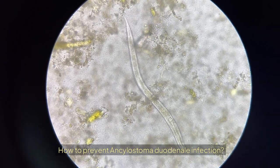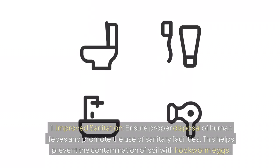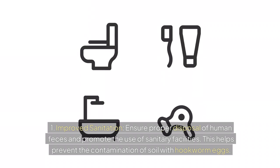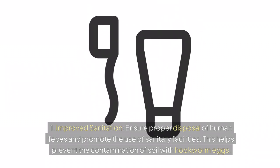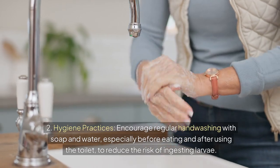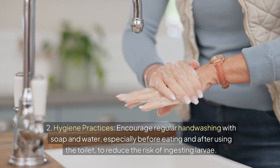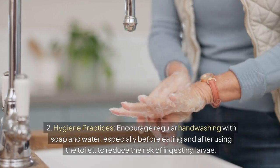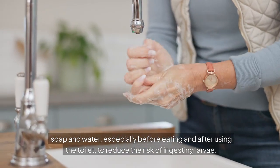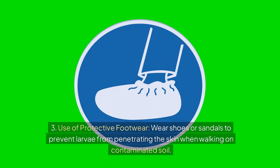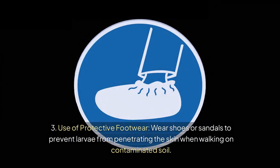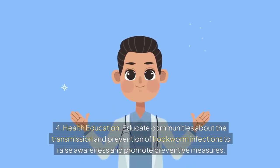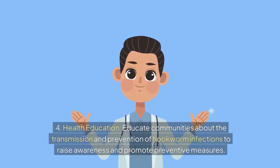How to prevent Ancylostoma duodenale infection. Measure 1 — Improved sanitation: Ensure proper disposal of human feces and promote use of sanitary facilities to prevent soil contamination with hookworm eggs. Measure 2 — Hygiene practices: Encourage regular handwashing with soap and water, especially before eating and after using the toilet, to reduce the risk of ingesting larvae. Measure 3 — Use of protective footwear: Wear shoes or sandals to prevent larvae from penetrating the skin when walking on contaminated soil. Measure 4 — Health education: Educate communities about transmission and prevention of hookworm infections to raise awareness and promote preventive measures.